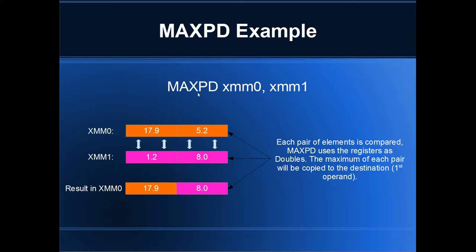MaxPD is looking for the maximum of packed doubles. Instead of the registers being read as four packed singles, you read SSE registers as two packed doubles, and that's what this instruction does. So it's going to compare 17.9 and 1.2, find the maximum because it's MaxPD, and store that maximum in the result — XMM0. It's pretty simple, really, what they do.